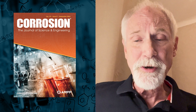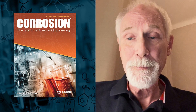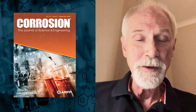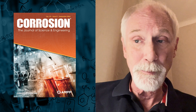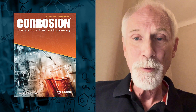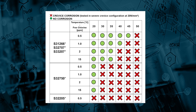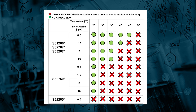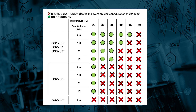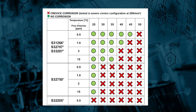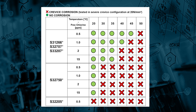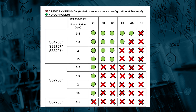The final result, and perhaps the most important conclusion from a practical point of view, was a table showing the risk of corrosion for the different materials as a function of free chlorine concentration and temperature in both situations.